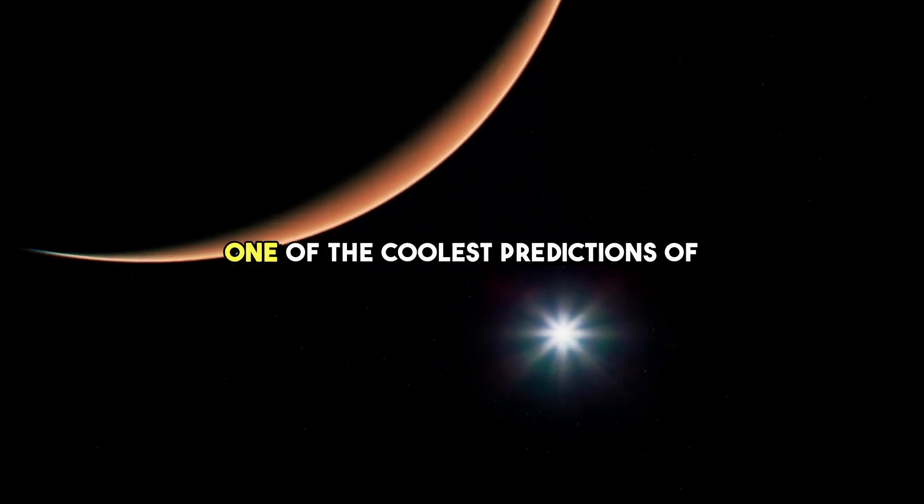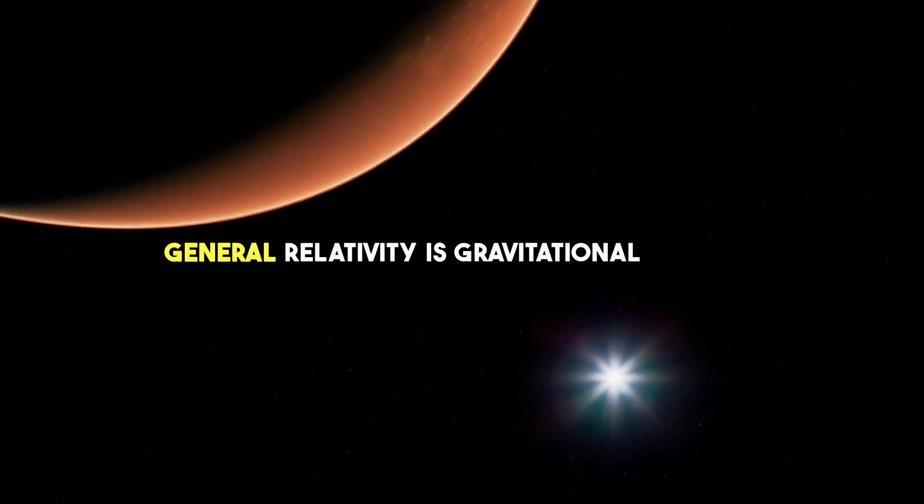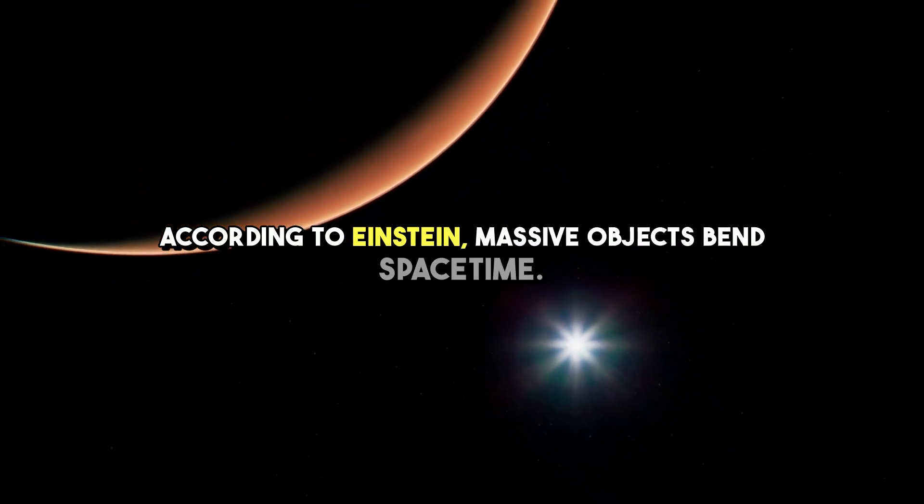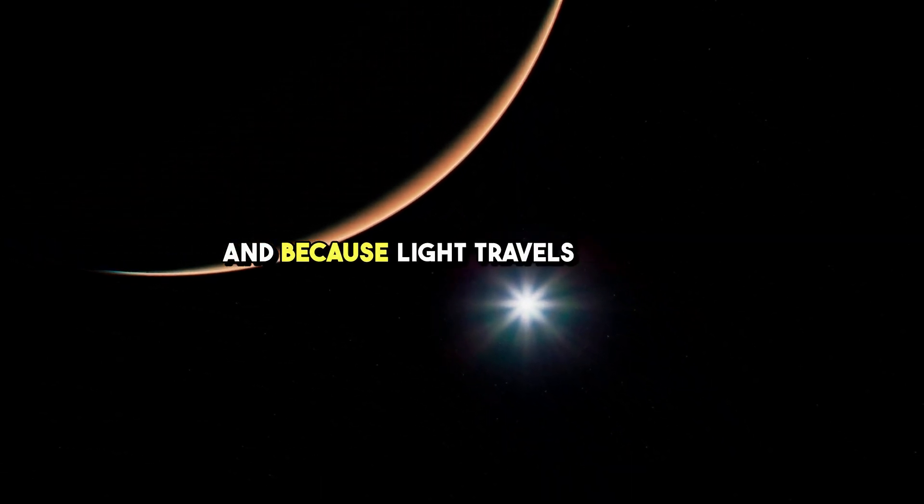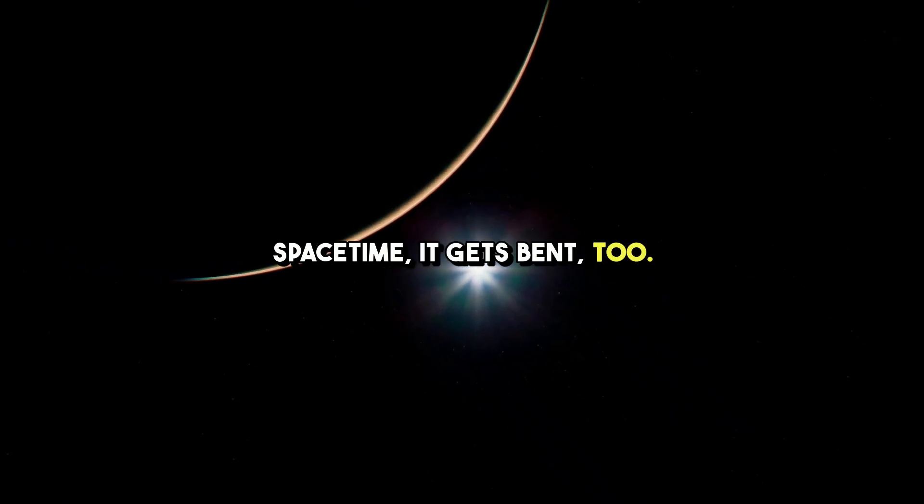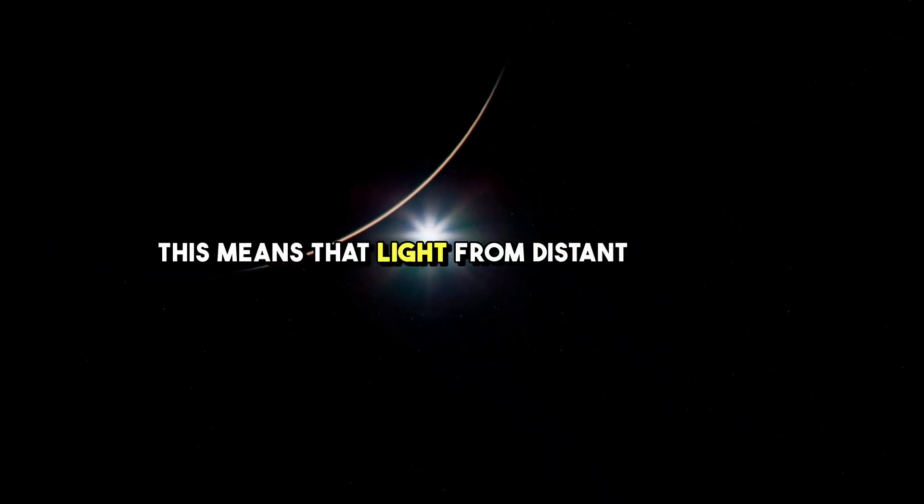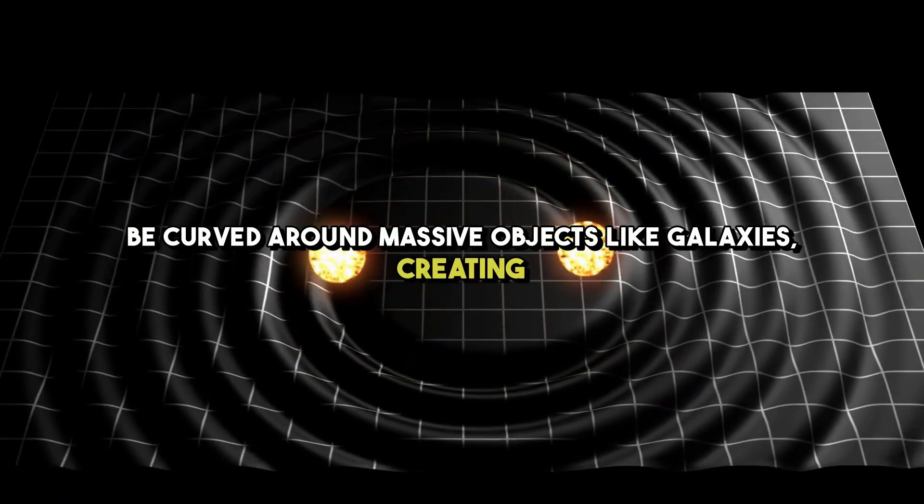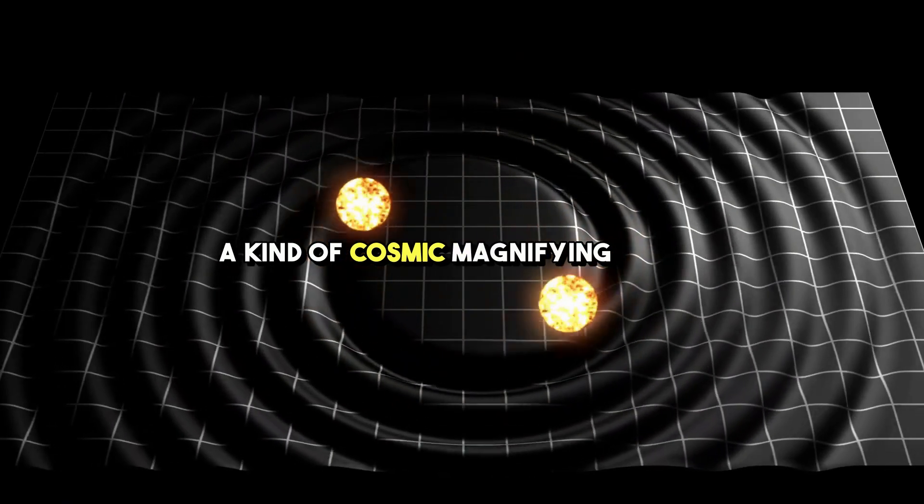One of the coolest predictions of general relativity is gravitational lensing. According to Einstein, massive objects bend space-time, and because light travels through space-time, it gets bent too. This means that light from distant stars can be curved around massive objects like galaxies, creating a kind of cosmic magnifying glass.